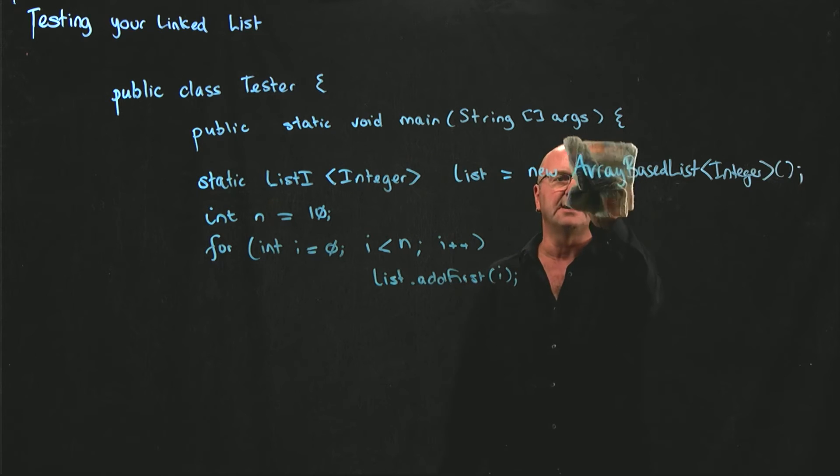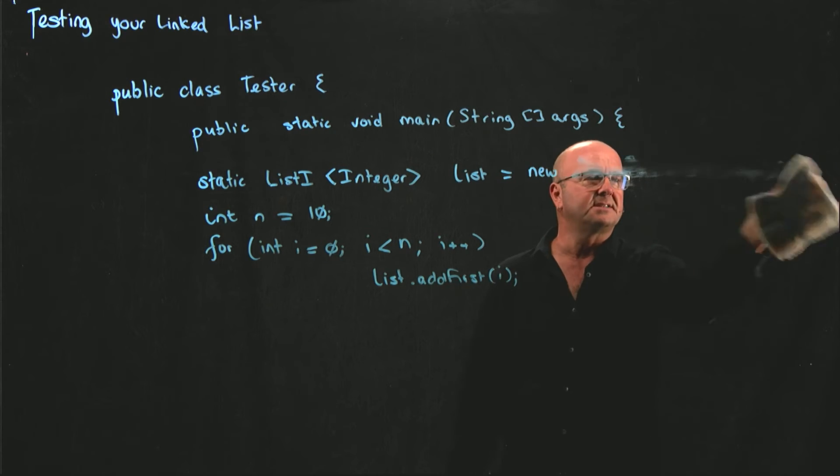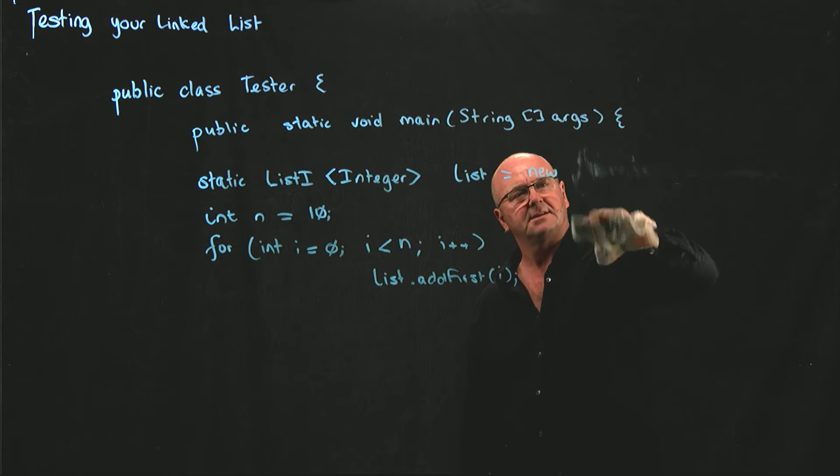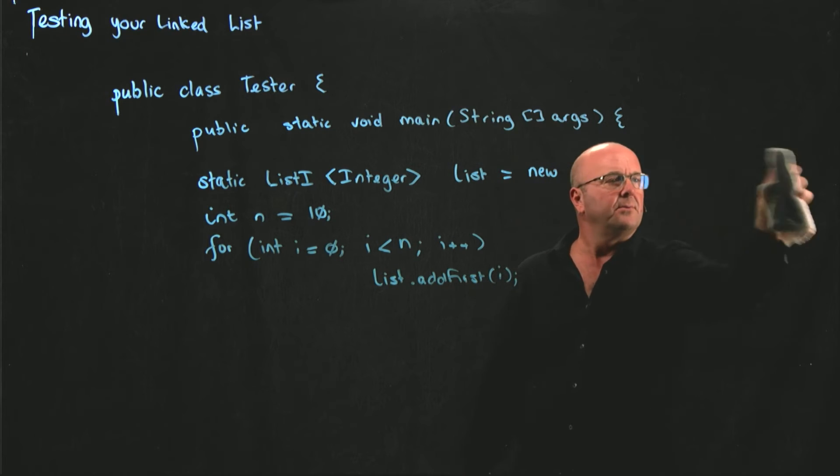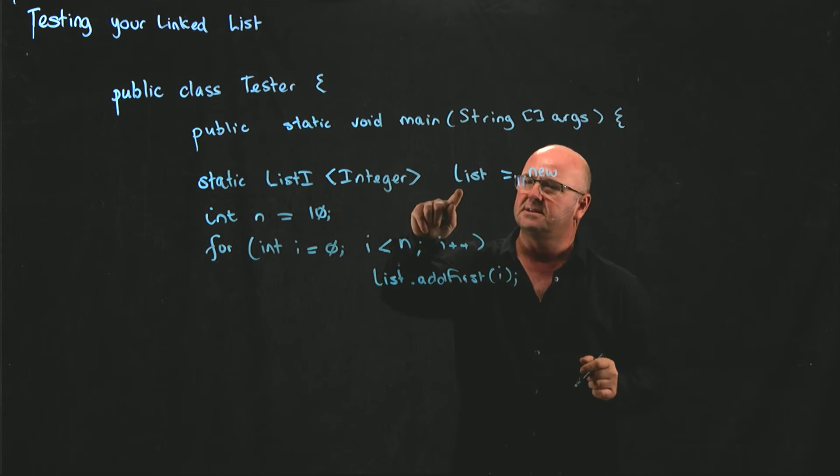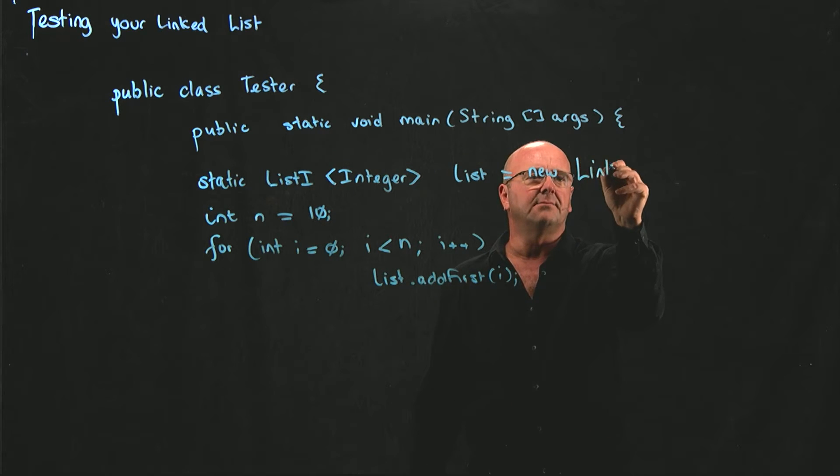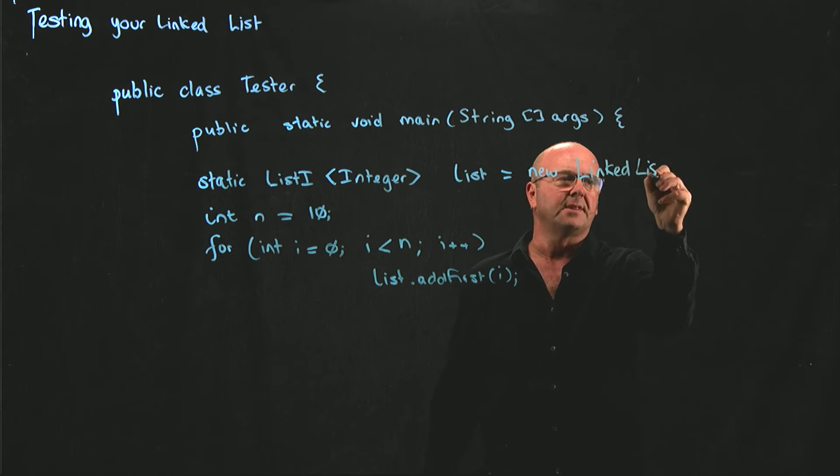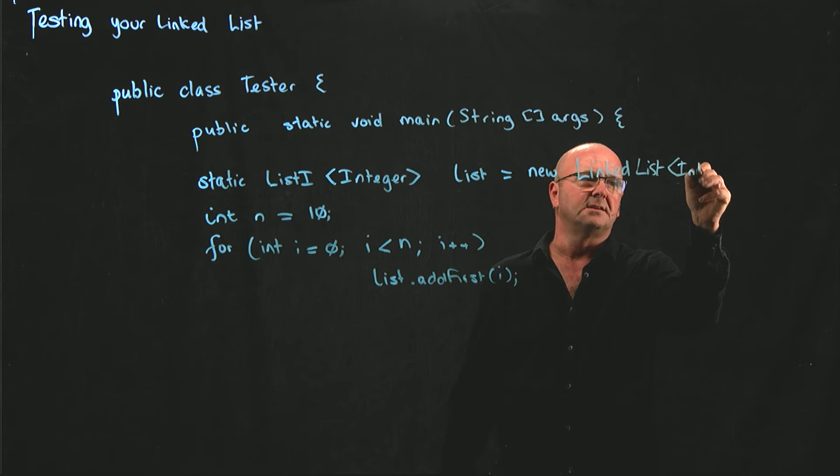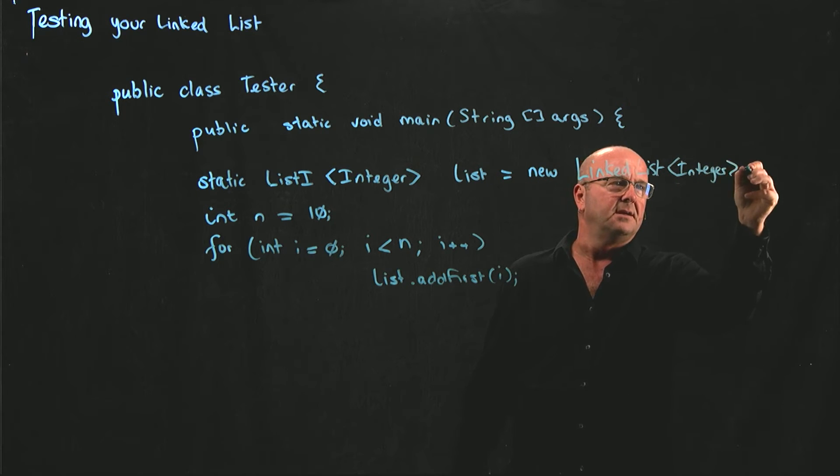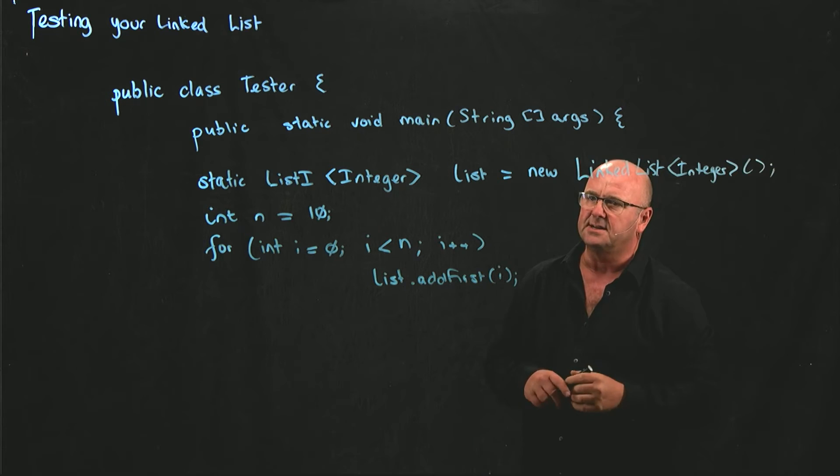So I only have to change the object that I'm calling here, but the rest of it, the List<Integer> stays the same. Remember List<Integer> is our interface, and our linked list, in our case our linked list, implements the methods in the interface. So we're allowed to define this variable as a List<Integer> object and then say that we're using the linked list implementation of that List<Integer> interface.